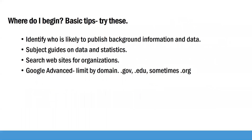So where can you begin? Here are some tips. Think about who's likely to publish background information, statistics, and data on your topic. Might it be a government agency? Might it be a professional organization? Look at subject guides on data and statistics — many library websites contain these specifically for public health. You may also search websites to find professional organizations that may have information on your topic. One thing I often do is a Google Advanced search on my topic, but limit it by domain.